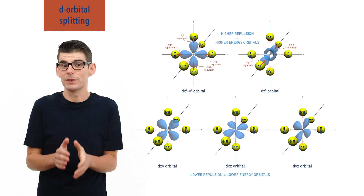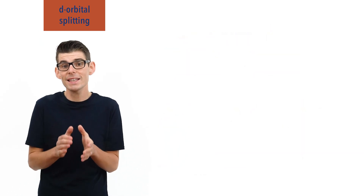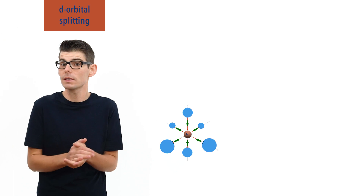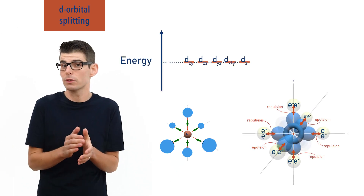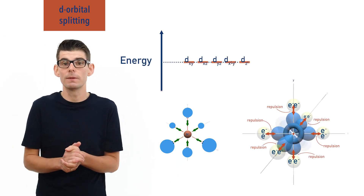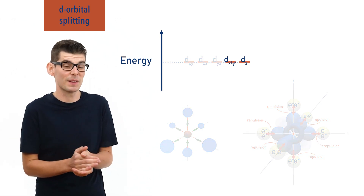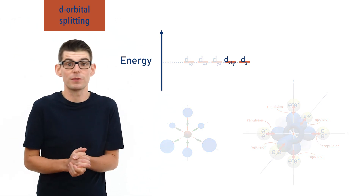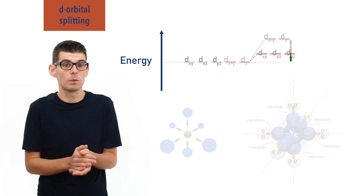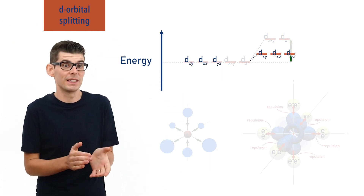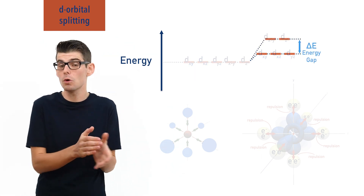This means that as an octahedral complex forms and six ligands bond to a transition metal ion, the D orbitals in the ion's outer shell split in energy. Two of them — dx²-y² and dz² to be specific — increase in energy more than the other three: dxy, dyz, and dxz. There is an energy gap between the split D orbitals.